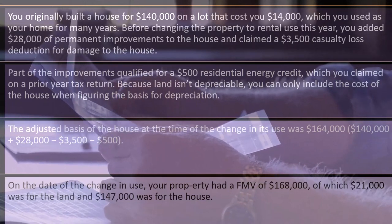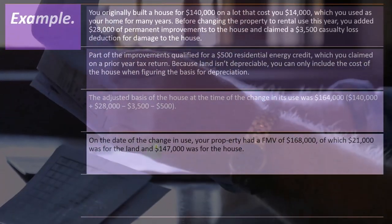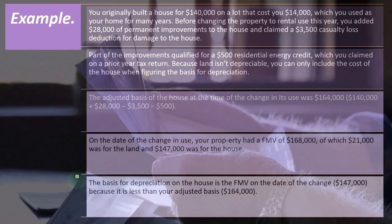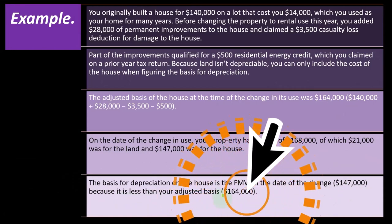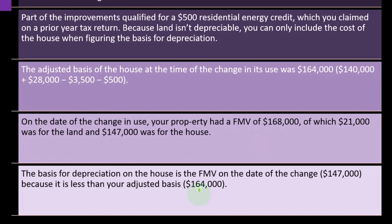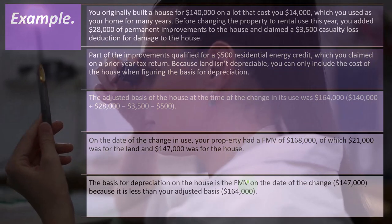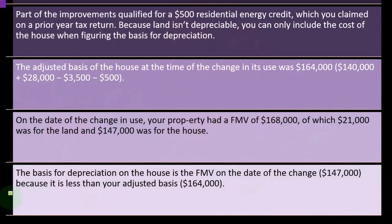On the date of the change in use, the property had a fair market value of $168,000, of which $21,000 was for land and $147,000 was for the house. So the basis for depreciation in the house is the fair market value on the date of the change — $147,000 — because it is less than the adjusted basis of $164,000. So we take the lesser of the two. We figure the adjusted basis and then the fair market value. You could do an appraisal or assess related properties to get the fair market value, and then the basis of the property is the fair market value because it is less than the adjusted basis.